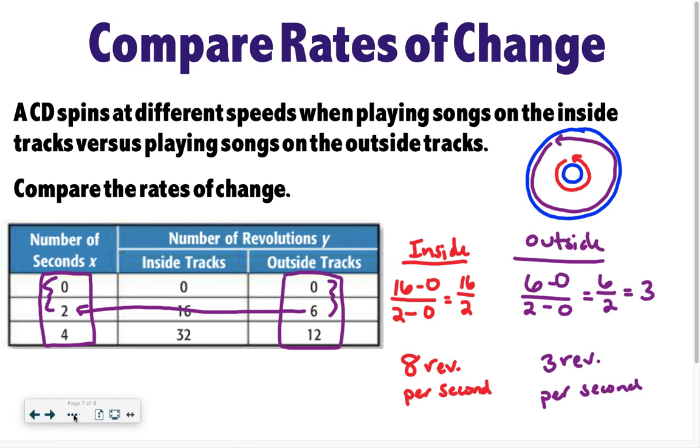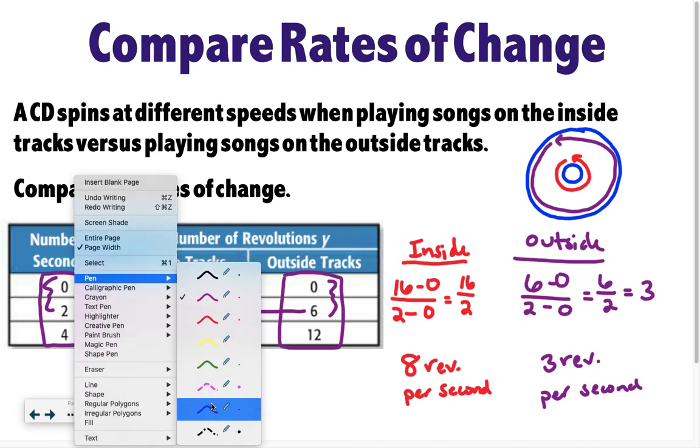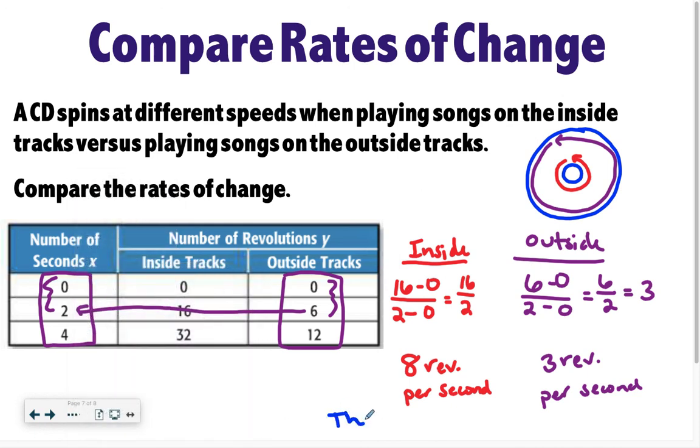So you can see that the inside track spins faster, right? So you would just write the inside track spins faster. And track is just another word for song. Some of you may be familiar with that term, and some of you might not, so I just wanted to clarify. So that's all you have to do. You just need to find the two different rates of change, and then say something about how they're related. In this case, I could say the inside spins faster, or I could have said the outside spins slower. Up to you, whatever you want.